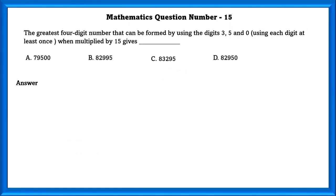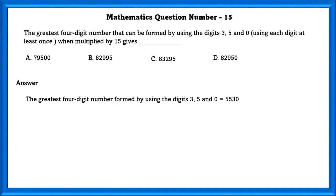Mathematics question number 15. The greatest 4-digit number that can be formed using the digits 3, 5, and 0 (each digit at least once), when multiplied by 15. The greatest 4-digit number is 5530. When we multiply 5530 by 15, we get 82,950.